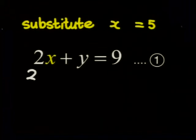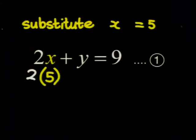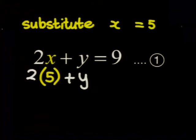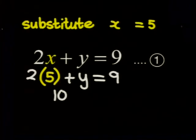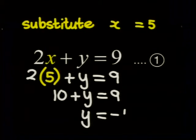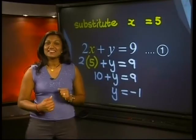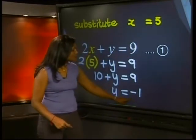So, we get 2 multiplied by 5 plus y is equal to 9. We get 10 plus y is equal to 9. And simplifying this, y is equal to 9 minus 10, which is minus 1. That's it. We have the solution. It is the ordered pair (5, -1).